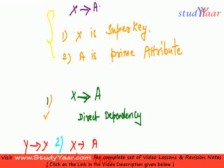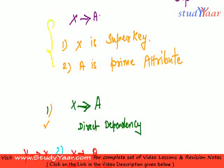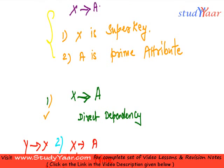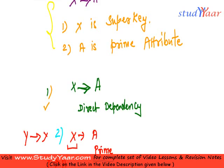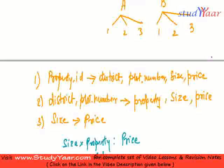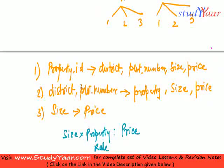I say if there is a non-trivial FD X to A, either X is a super key or A is a prime attribute. Now let's take a look at first. Property ID is the super key, so this is good. As of now, this is in 3NF.